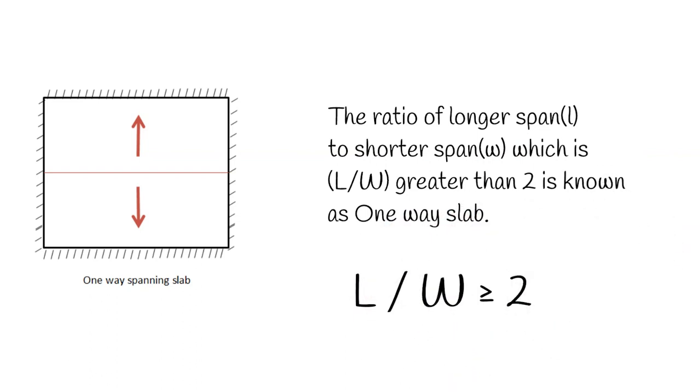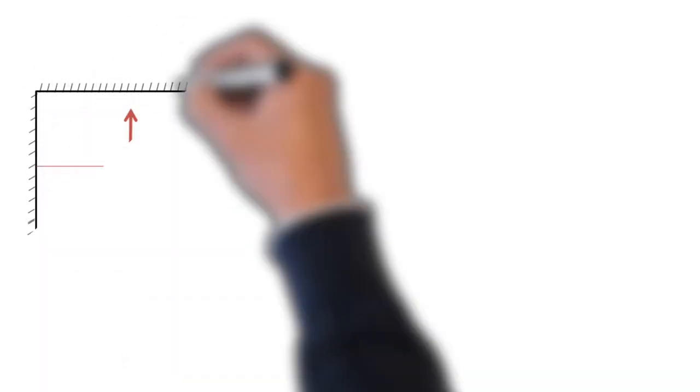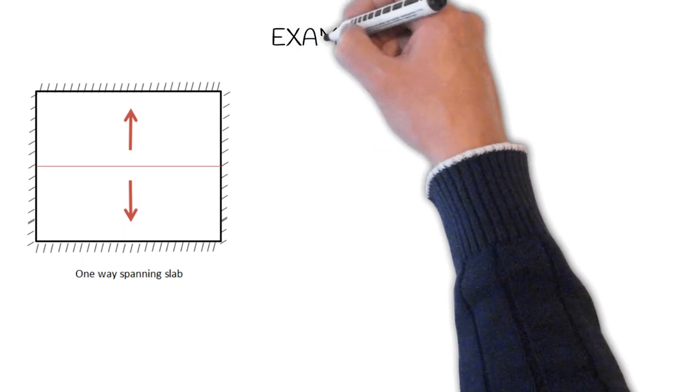So one-way slab is: longer span L divided by shorter span W equals or is greater than two. Let us understand it more easily with the help of an example.